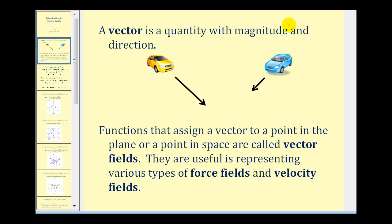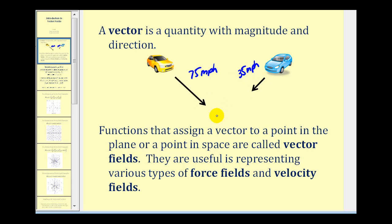A vector is a quantity with magnitude and direction. Here we see two black vectors that represent the speed and direction of the yellow and blue cars. The arrow points in the direction of motion, and because the yellow car has a longer vector, its magnitude is larger, meaning the yellow car is going faster — for example, 75 miles per hour versus 35 miles per hour for the blue car.